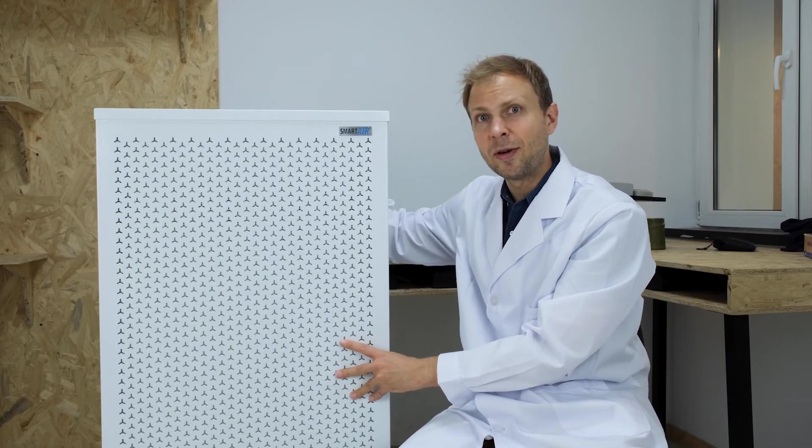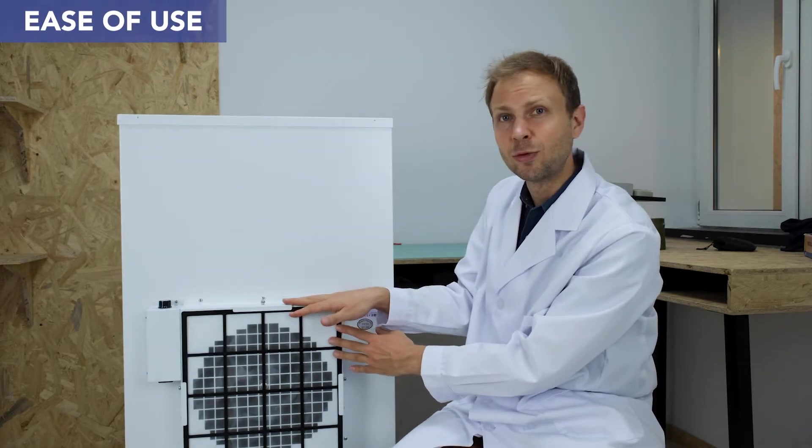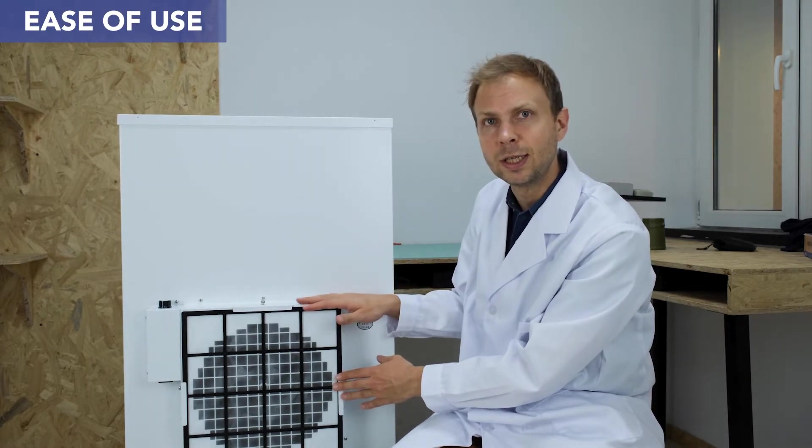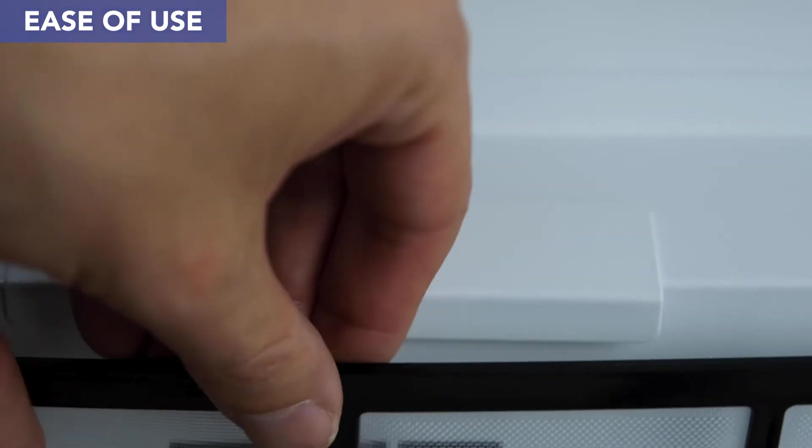Thirdly let's spin around the Blast to the back and let's talk about its ease of use. The Blast has a really handy pre-filter which is really easy to remove. All you need to do is twist and unscrew this and then you can remove the filter.